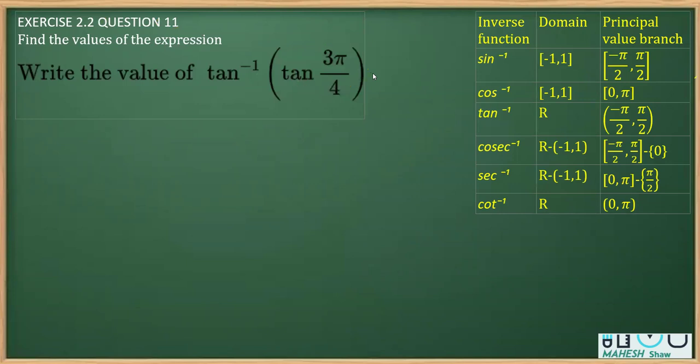Now you should know that for the principal value branch, the range for tan inverse is minus π by 2 to π by 2.